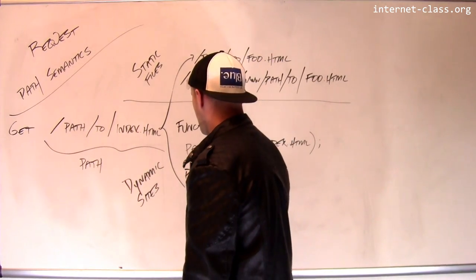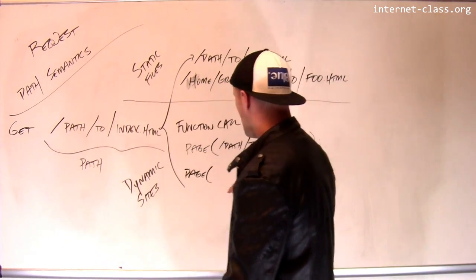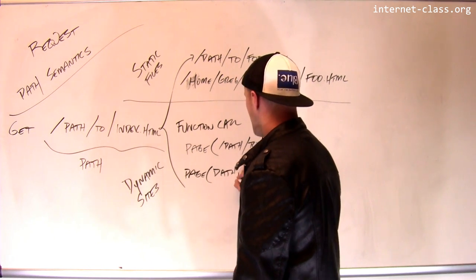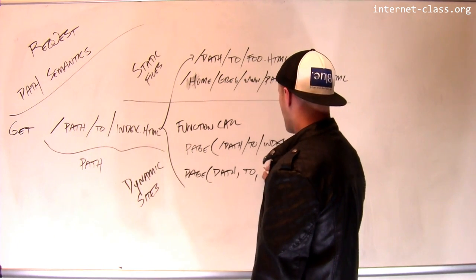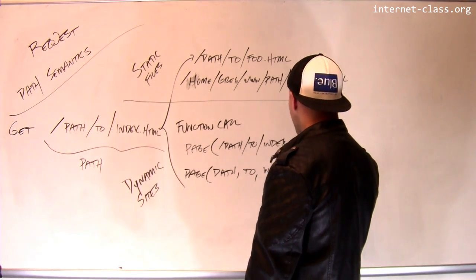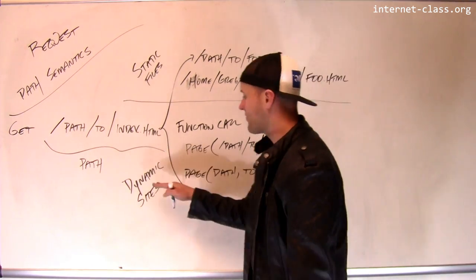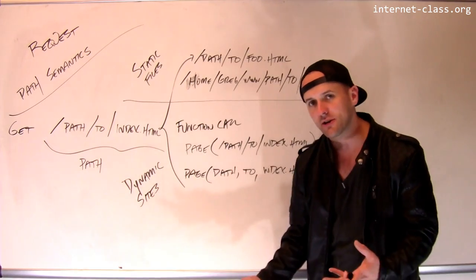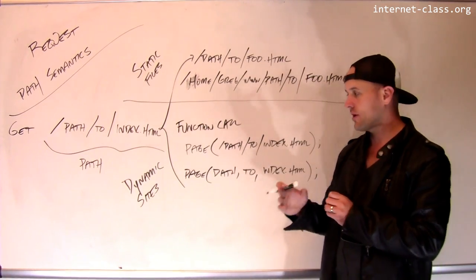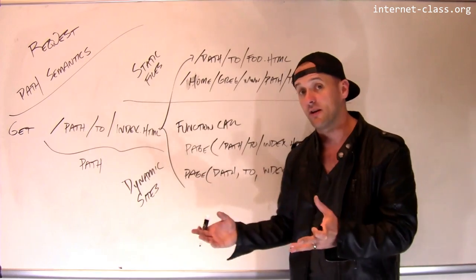That same function could also take any combination of the permutations of this. So maybe it takes one argument which is path, a second argument which is two, and the third argument which is index dot HTML. The way that these paths get converted to actual function calls on the server is totally up to the web server code and the dynamic code that's running on the website.